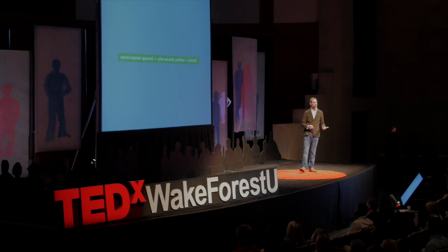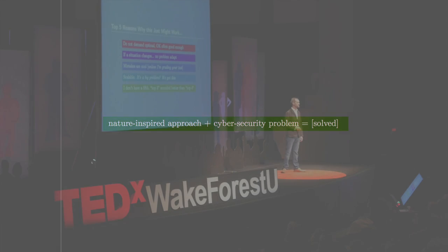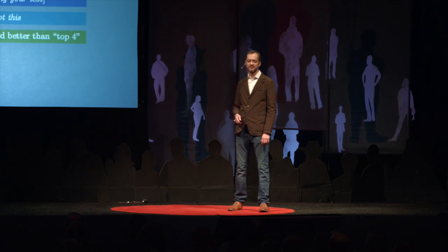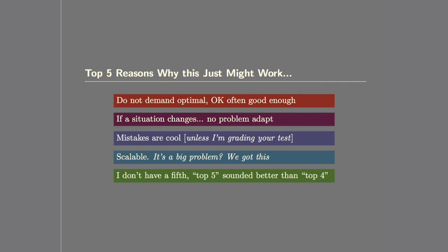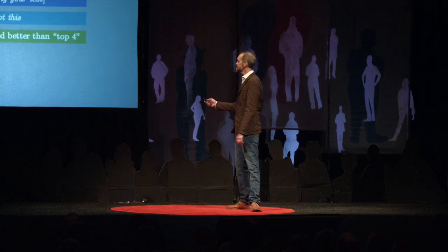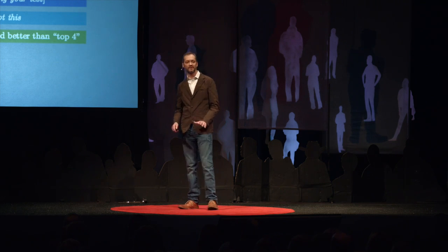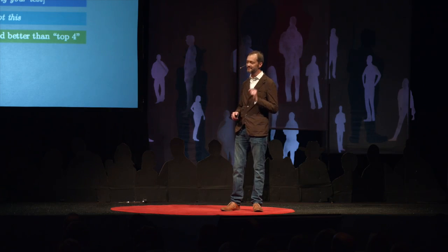I do believe that a nature-inspired approach is maybe the right way to go for some of these complex problems. I can give you four good reasons why I think this is a pretty cool approach. The first is I like these approaches because they don't demand optimal all the time. Often, okay is good enough. Maybe that path we found to the food source isn't the best yet, but it found the food source and will improve over time. We need this in cybersecurity — 80% is fine, just please improve it next time. If the situation changes, no problem — adapt. Natural systems adapt all the time, and in cybersecurity, to me, it's the name of the game. Attackers change; they're not static, but for some reason, we love our static defenses.